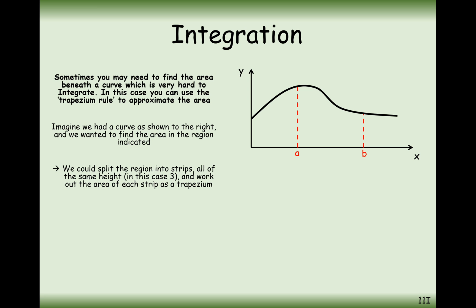What we can do is split the region into three strips and work out the area of each strip. If we join the line from y0 to y1, from y1 to y2, y2 to y3, what we've effectively got here is three trapeziums — that's why they call it the trapezium rule. We're going to be working out the areas of these trapeziums by using the formula for the area of a trapezium.